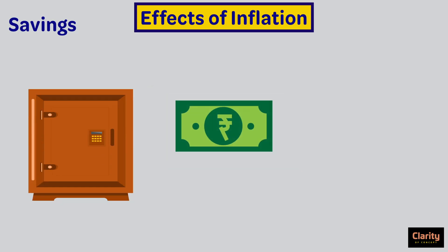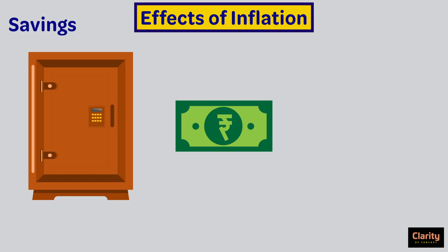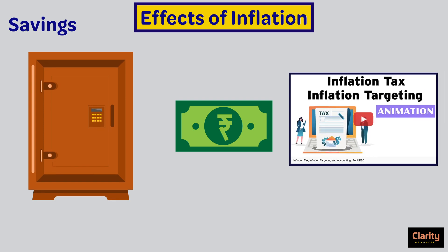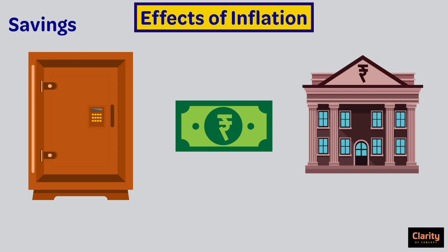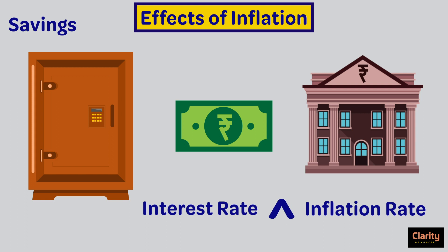Regarding the effect of inflation on savings: inflation reduces the value of money, so keeping money in a home locker is not an intelligent option, as we saw in the inflation tax video. People therefore keep money in banks, which is likely to increase the saving rate in an economy in the short run. It is important to note that keeping money in banks is useful only if the interest rate is higher than the inflation rate. If the inflation rate is more than the bank interest rate, keeping money in banks is also not an intelligent option.